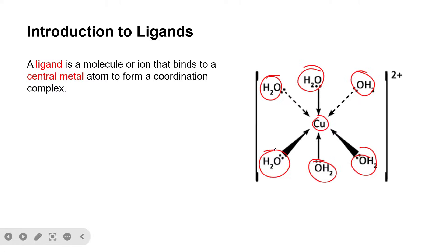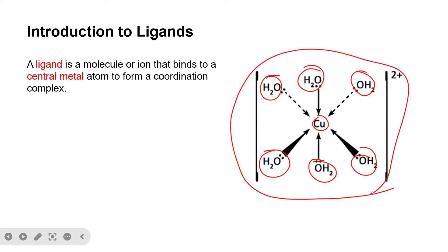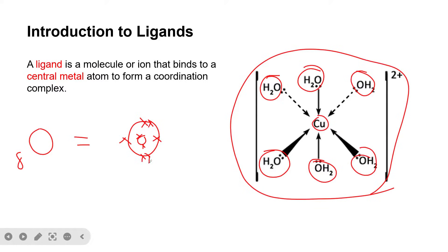This is what you call a coordination complex. For a compound to be considered a ligand, it must possess lone pairs of electrons. For example, in water we have oxygen. The atomic number of oxygen is eight; drawing the electronic configuration, on the first shell you have two electrons, and then one, two, three, four, five, six — so oxygen has two lone pairs of electrons, but only one typically participates in the formation of a coordination complex.